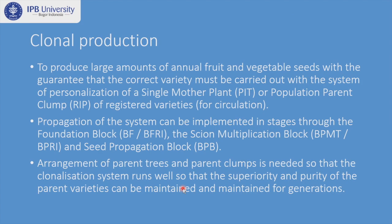Clonal propagation is obligatory to produce a large amount of annual fruits and vegetable seed with a guarantee of variety correctness. It will be implemented using a single mother plant — in Indonesia called the PIT or Pohon Induk Tunggal — or a population parent clump (Rumpon Induk) of a registered variety. The system is implemented in stages: first a foundation block, then a scion multiplication block, and then a seed propagation block.